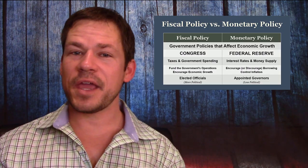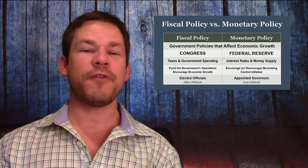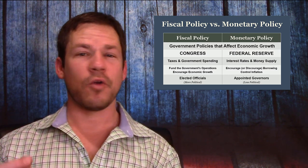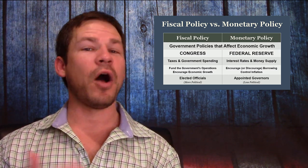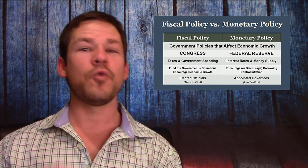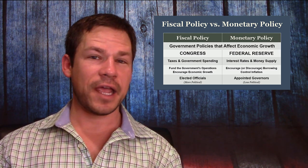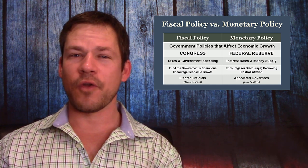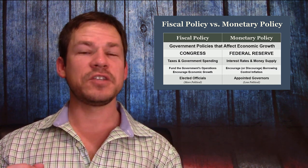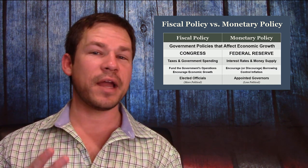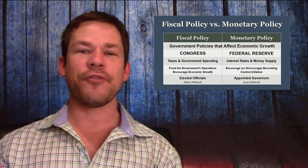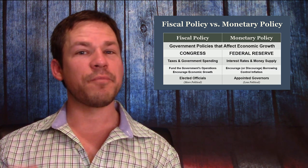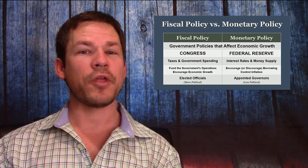Just to recap: fiscal policy is set by Congress — by politicians — and has to do with taxes and spending. Whereas monetary policy is set by the Federal Reserve, having to do with interest rates and the money supply, and is set by people who were appointed and are less directly responsive to political pressures.